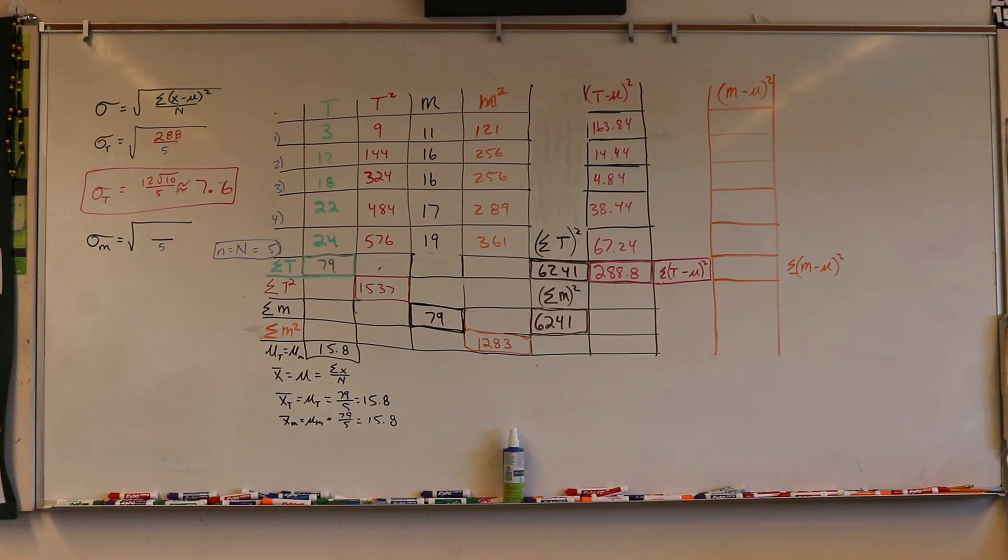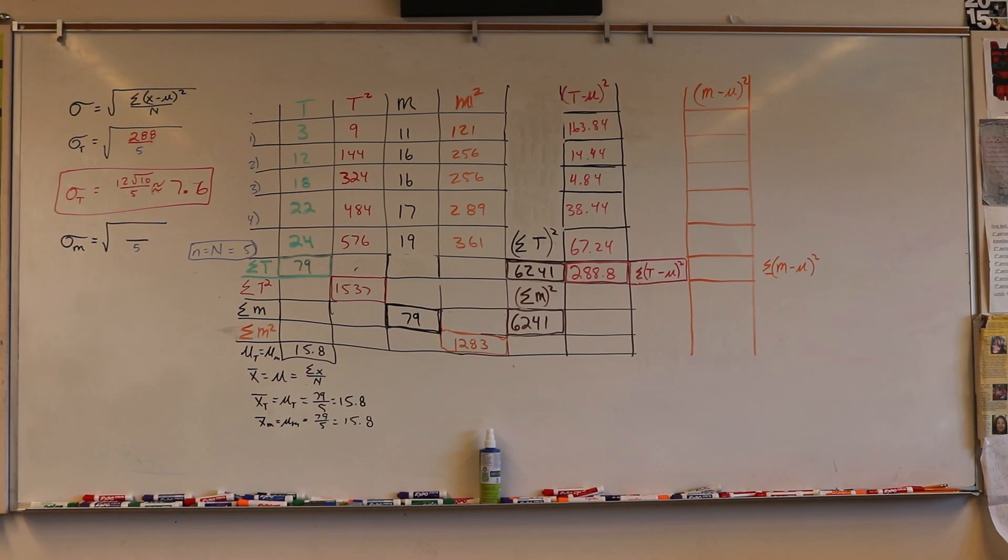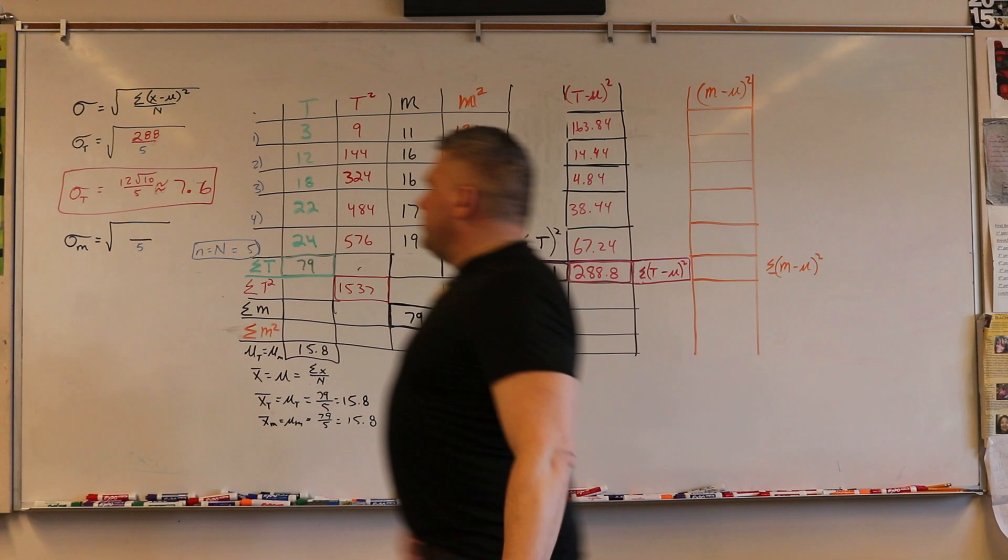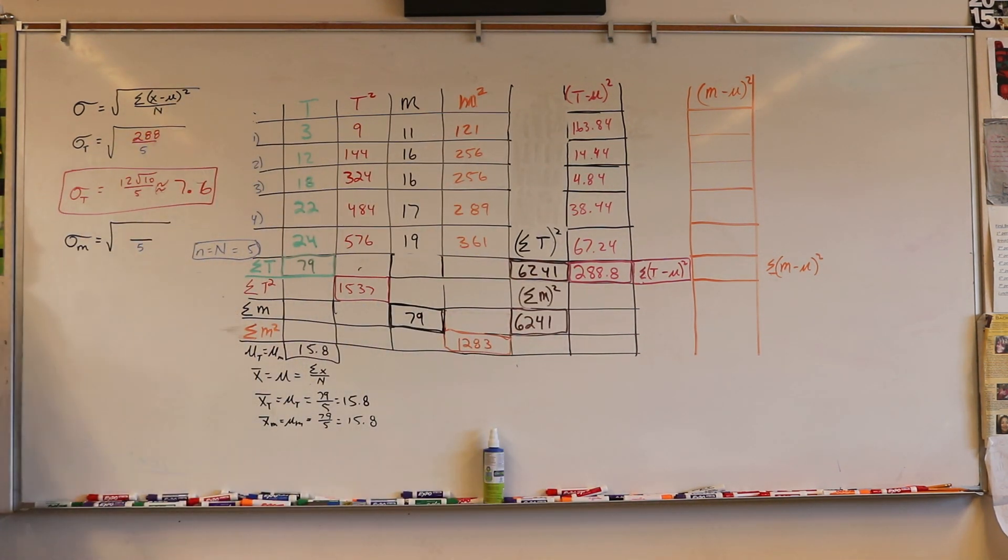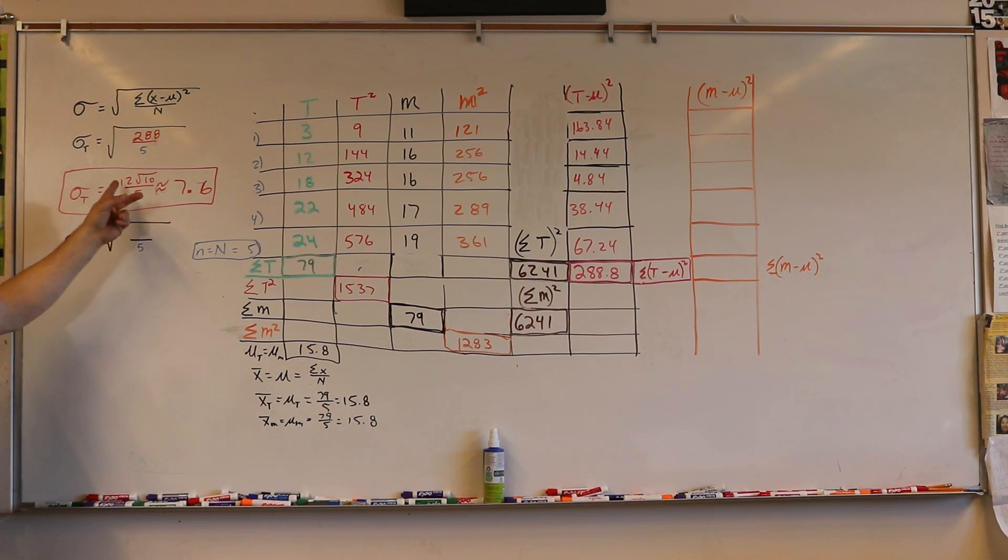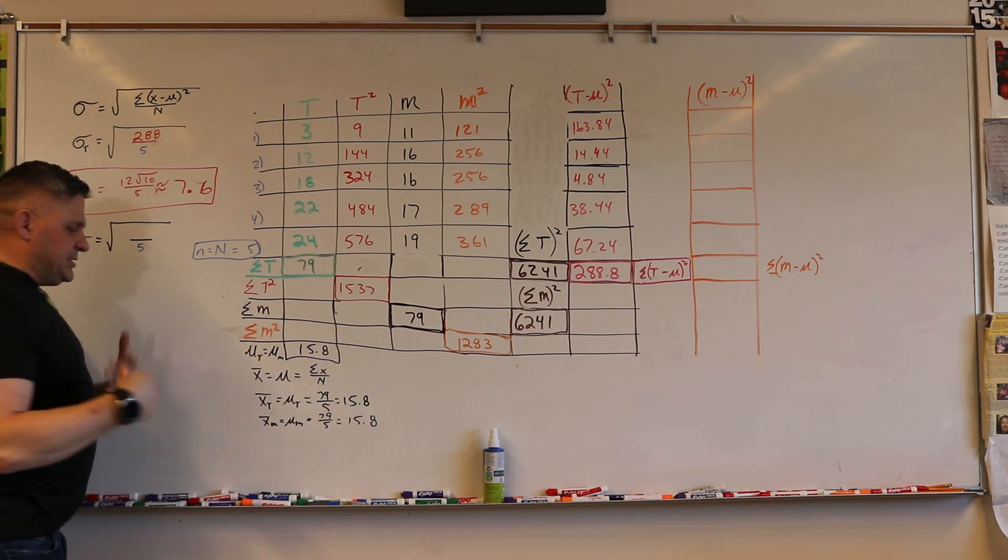Alright, let's see if this will last the whole time. So we're trying to find the sigma. We're going to take the sums of the T's and subtract the mu. The way we found mu was we took the sum of the T's and divided it by the number of numbers.